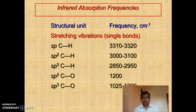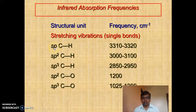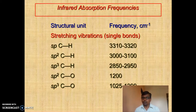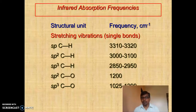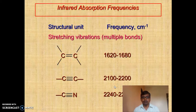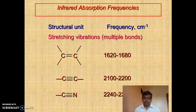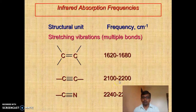Looking at important absorption frequencies: for C-H, if the carbon is in an sp-hybridized state, higher vibrational frequency is required because sp hybridization gives more s-character and stronger bonds. For sp2, slightly less frequency is required, and for sp3, the vibrational frequency is slightly less than 3000 cm⁻¹. For carbon-carbon double bond, more strength means more frequency required, and for carbon-carbon triple bond, even greater strength means even more vibrational frequency.